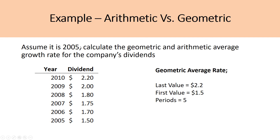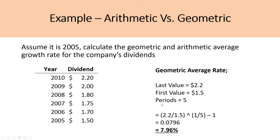It's really important to identify that we are in base year 2005, so we're not including 2005 as a period. Instead, it is 2006, 7, 8, 9, and 10, which means n equals 5. A lot of students, when they quickly skim through their questions, will assume there are six periods because they'll count six years — that's not correct. 2005 is the base year. So n equals 5. Then we input these values into the formula: 2.2 divided by 1.5, raised to the power of 1 divided by 5, minus 1, equals 7.96% — our geometric average growth rate.